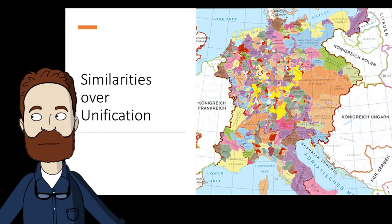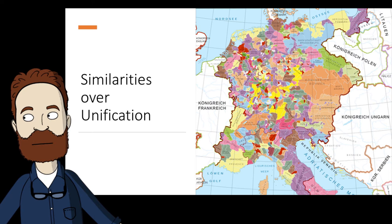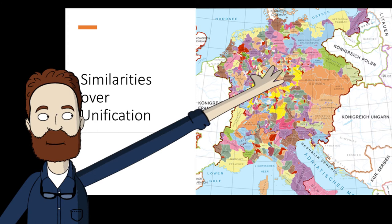Both Germany and Italy would achieve national unity through the pressure of a dynamic state. In Italy it was Sardinia, and in Germany it was Prussia.